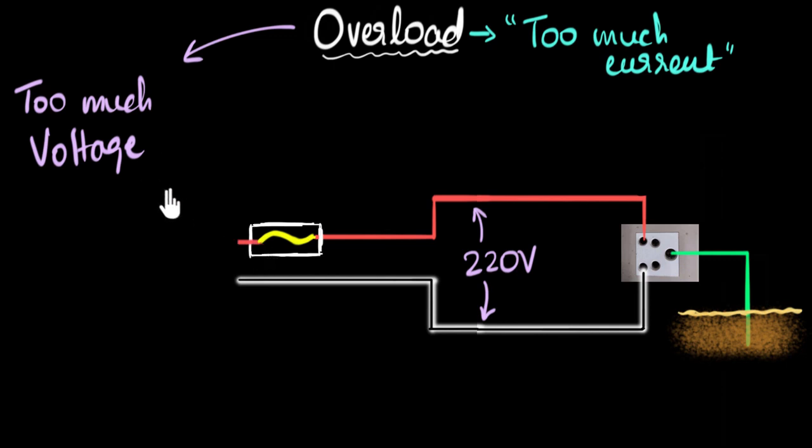And again, fuse protects us from such voltage surges. Another way in which an overload can happen is, there is not too much voltage, nothing is happening when it comes to voltage, but we could be using too many devices. Too many devices.